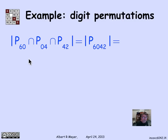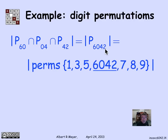Finally, permutations containing all three patterns — 6,0 and 0,4 and 4,2 — are exactly those with the four-digit pattern 6,0,4,2. Treating '6,0,4,2' as one object plus the remaining 6 digits gives 7 objects total, so there are 7 factorial permutations with all three patterns.